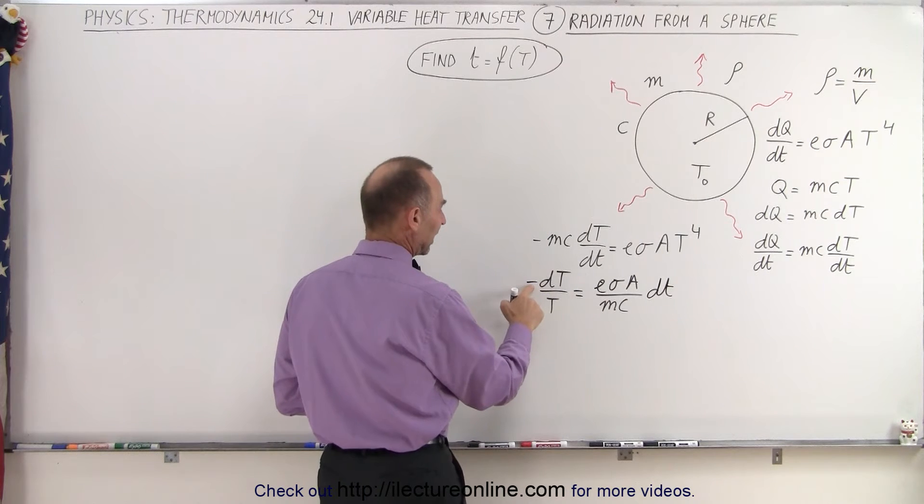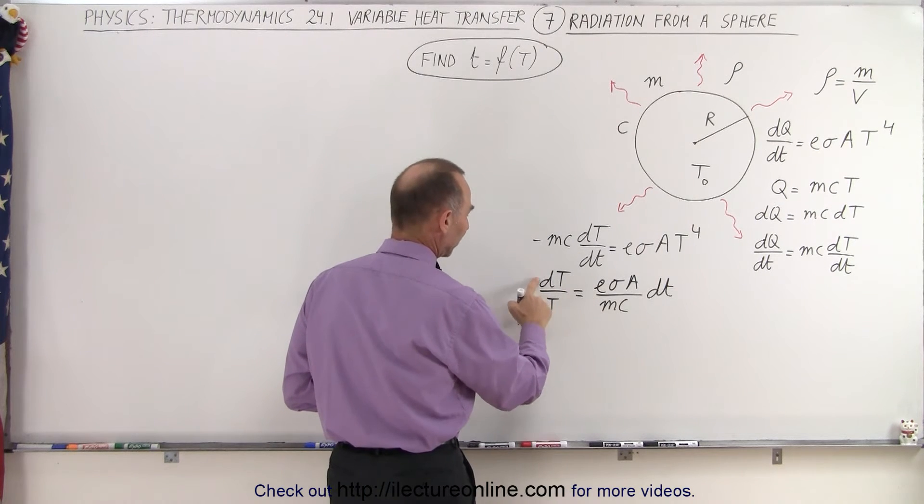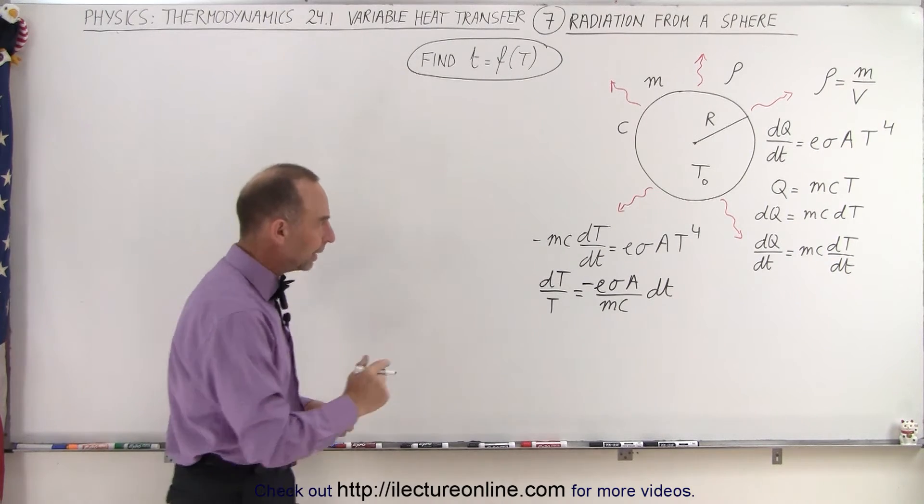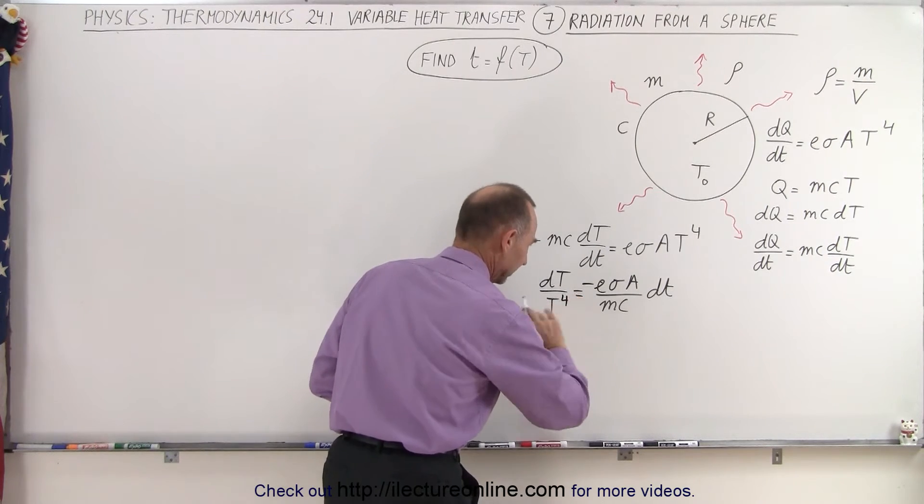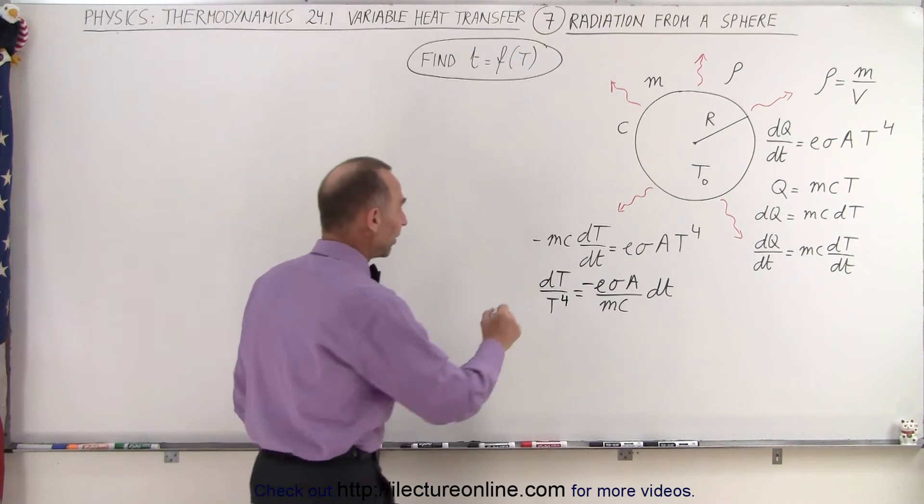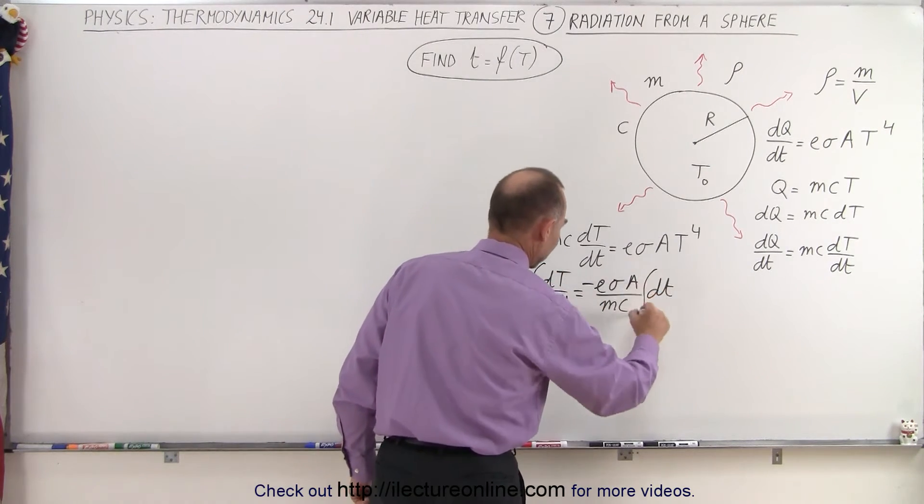Then it may make sense to take the negative sign here and place on the other side. So we're going to do that. We'll put it right over there. And of course this is T to the fourth power. Now I think I have this correct. So now we're going to go ahead and integrate both sides. So we'll integrate this side, we'll integrate this side.